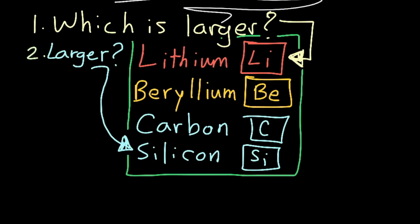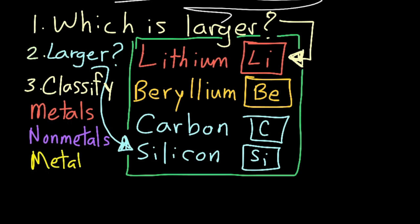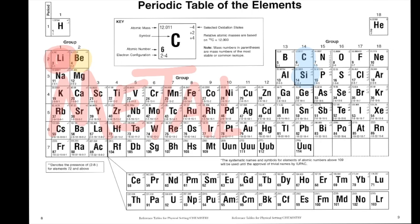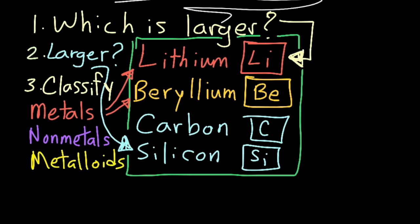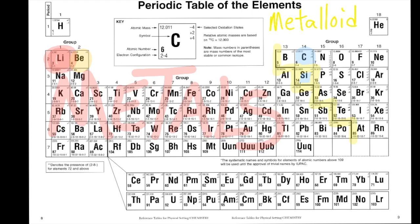Number three, can you classify these four elements as metals, non-metals, or metalloids? Lithium and beryllium are metals because they are left of the stair-step line. Silicon is a metalloid, it sits on the stairs, and carbon is a non-metal.